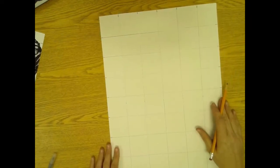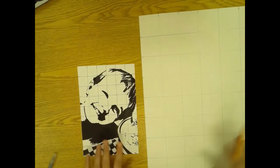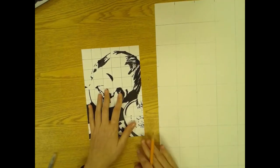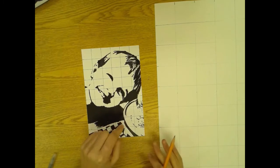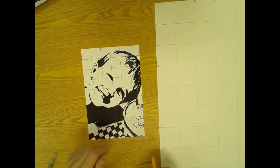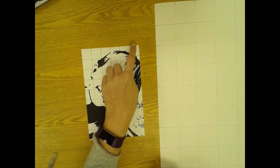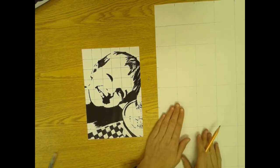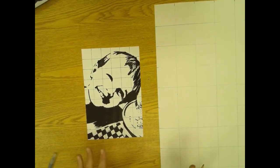Now that I have my big grid drawn, I'm ready to start copying from my small picture to enlarge it. What I have to make sure that I do on my small picture and my big picture is label each of the boxes across the top with letters and down the side with numbers, and the same thing on this one, so that I don't mix up my boxes and draw the wrong thing.